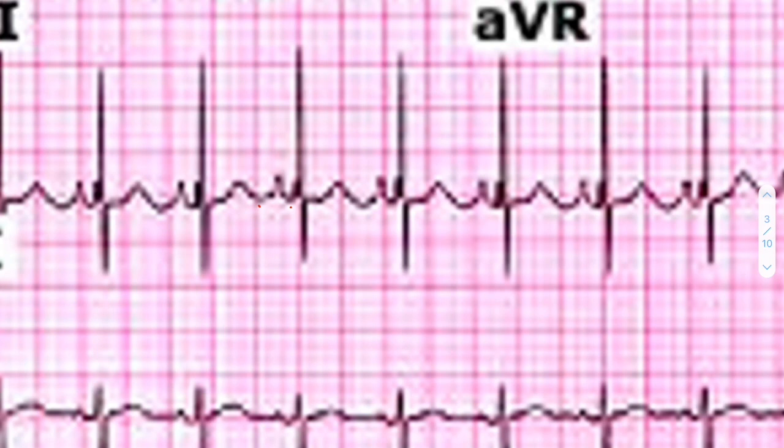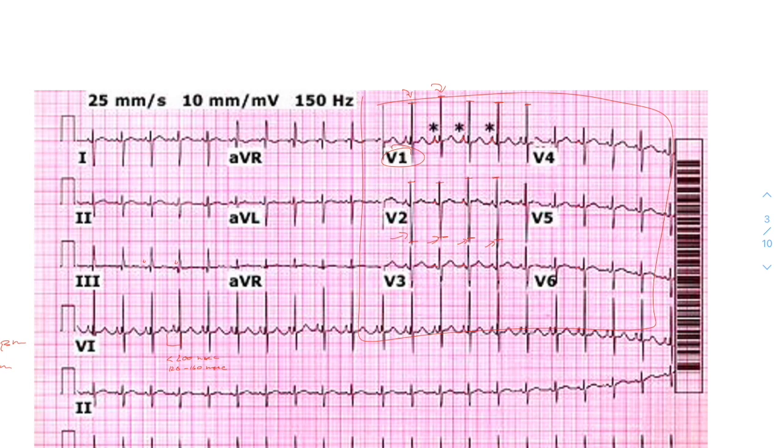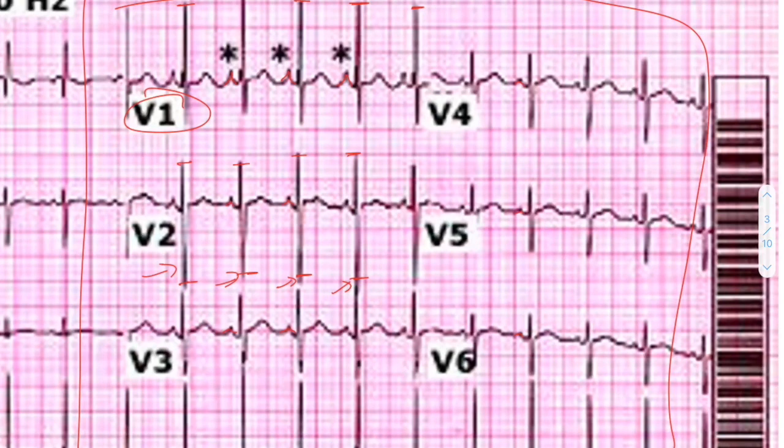It's really kind of hard to actually count out how many boxes this is, but you're definitely coming in at less than 200 milliseconds, which is our ideal range for our PR interval. You might say that this is maybe between three and four small boxes, so somewhere in the range of 120 to 160 milliseconds, which is perfectly fine for our PR interval.